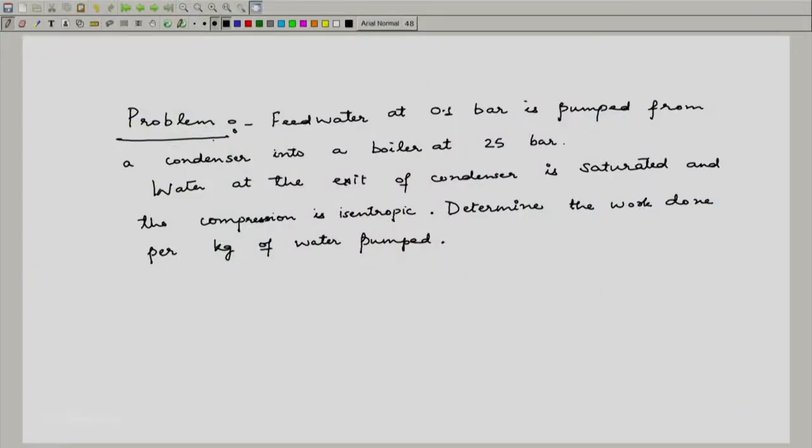Let me read it out: feedwater at 0.1 bar is pumped from a condenser into a boiler at 25 bar. Water at the exit of condenser is saturated and the compression is isentropic. Determine the work done per kilogram of water pumped.